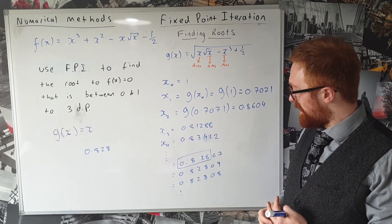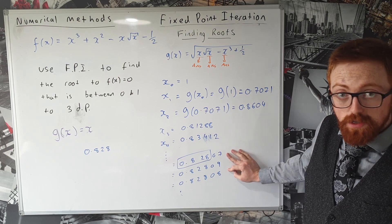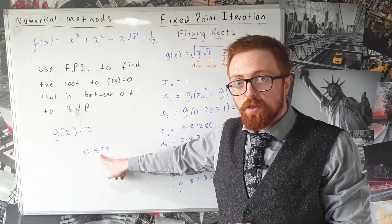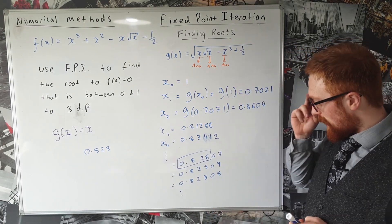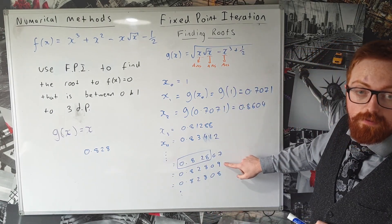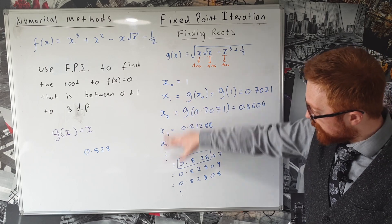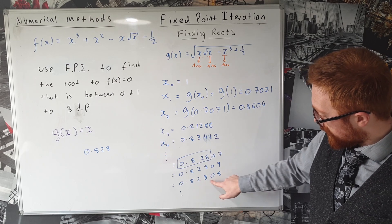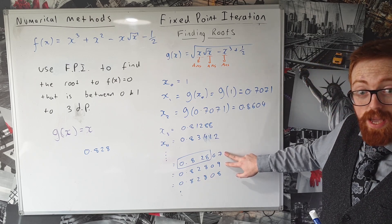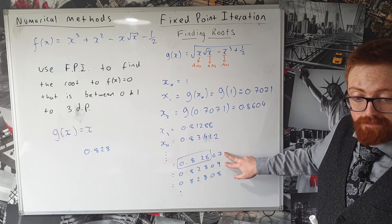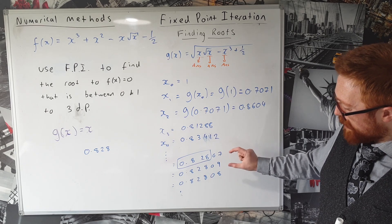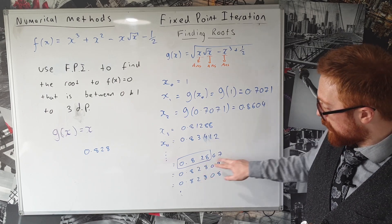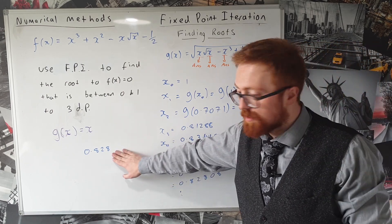OK, now in this case this is actually sufficient to show that our solution is 0.828 accurate to three decimal places. And the reason that's the case is because if you look at the two previous terms in our sequence of our estimates, then 0.82808 is in between the previous two estimates. So we've bound it in between these two, and because both of these will clearly round to 0.828, then that's our solution.